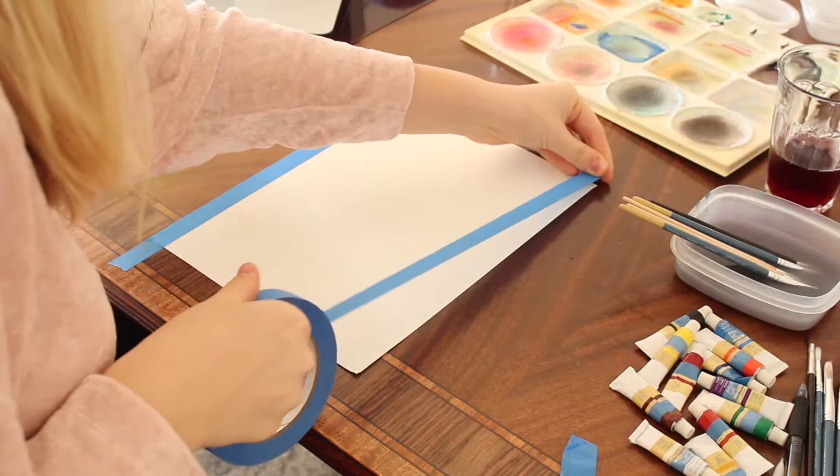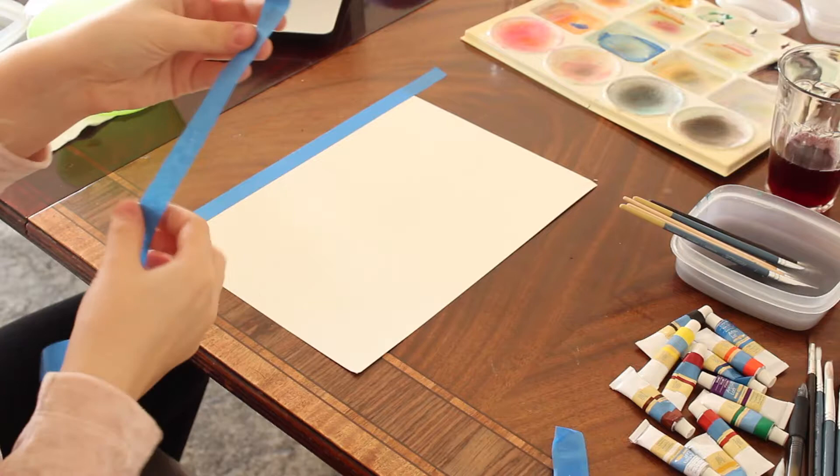First you're going to tape down your thick watercolor paper on your table so that when you apply water the paper doesn't rise up and get all gross and weird.